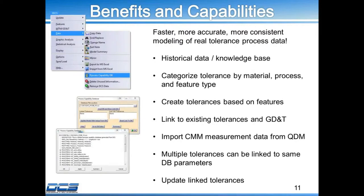What we use is we take historical data or your knowledge base and then we create a database within DCS. We like to categorize each of these tolerances from your knowledge base by material, process, and feature types so that we can filter and categorize through maybe your list of thousands of different possibilities of tolerances and easily find the one you want to apply.